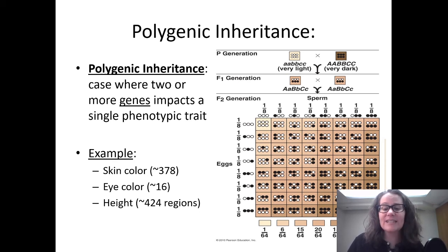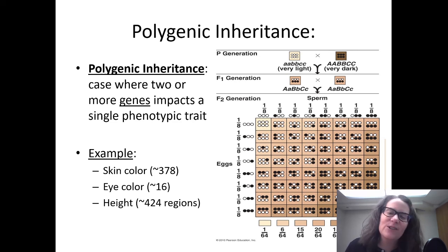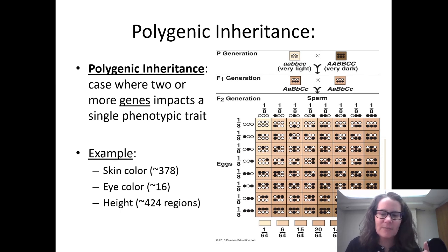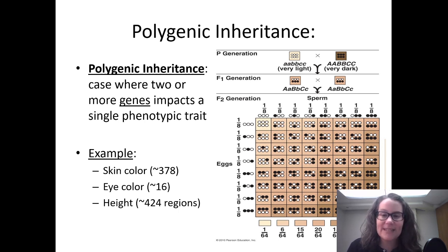Eye color has about 16 genes weighing in on the final result, and we think there are 424 regions that influence your final height across your lifespan. I've started this lecture, Variations on Mendel, to show you a few ways that Mendel's laws get more complicated as we step outside of that one inheritance pattern and explore ways to add complexity to inheritance. I'll see you next time.